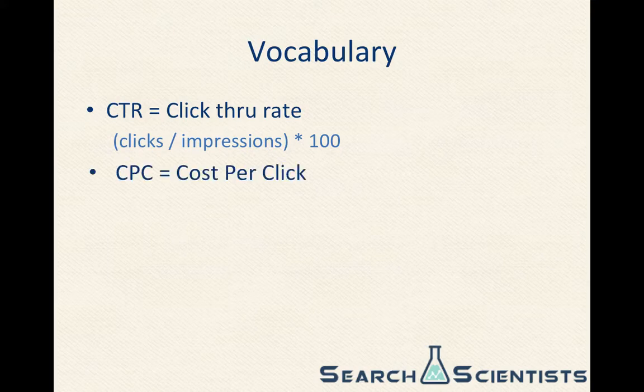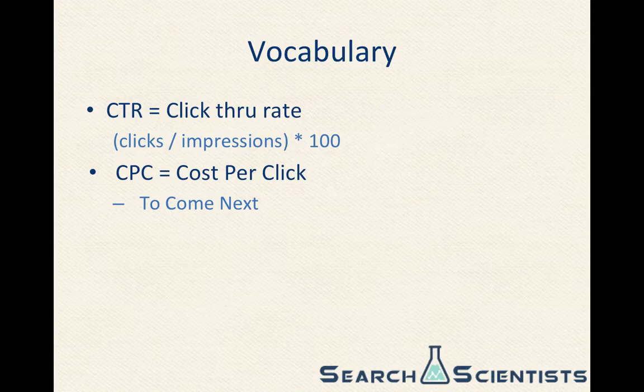Up next, we have CPC, and on the very surface level it just stands for cost per click. We're actually going to talk about how Google calculates what your CPC is, because you've probably noticed some situations where your bid might be $1 but you only end up paying $0.89.